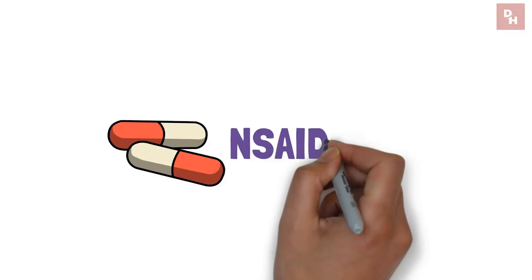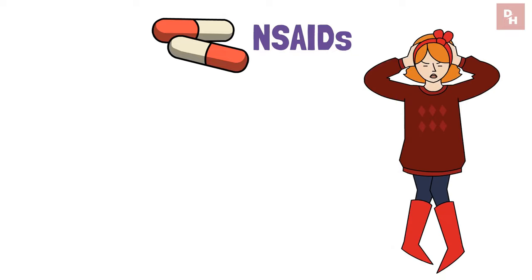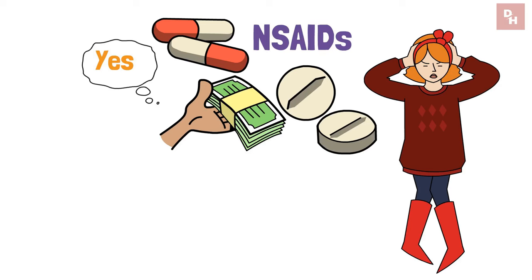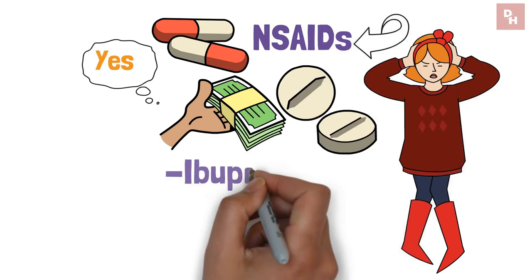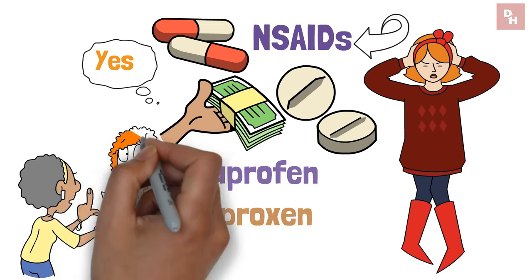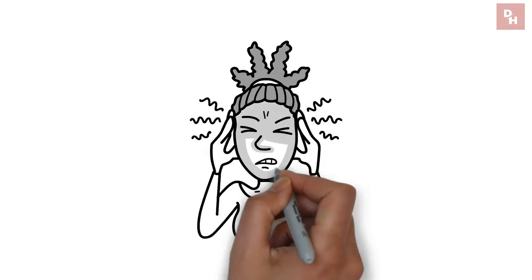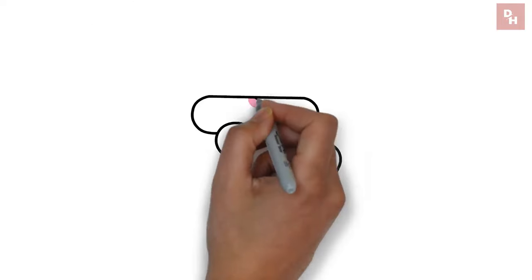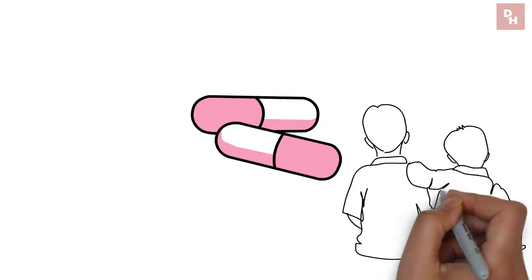Pill number two, NSAIDs. Ever thought the relief from your go-to painkiller might come with a hidden cost? Yes, we're talking about those handy NSAIDs, ibuprofen, naproxen, and the like that we all reach for without a second thought, whether it's for a headache, joint pain, or those pesky menstrual cramps.